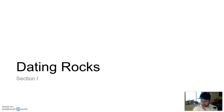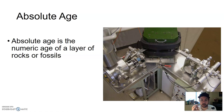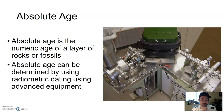Well, there are a few different ways. The first way to date a rock is using something called the absolute age. This is the numeric age of a rock or a fossil — like saying this rock is 250 million years old, or this fossil is 8 million years old. Putting a specific number on it — that's the absolute age. It can be determined using fancy equipment, like what you see here, and a process called radiometric dating. More on that a little later.